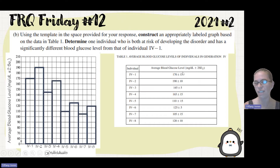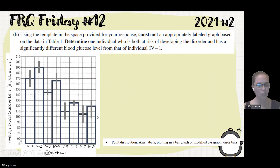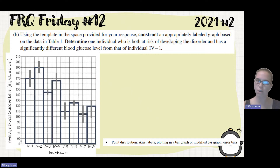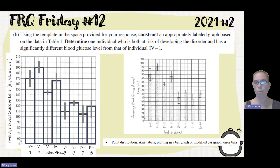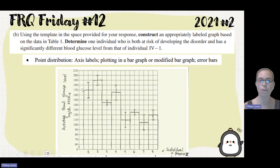We look at the plus or minus values. Notice we have a plus or minus 15, which means I'm going to go above 170 by 15 and below 170 by 15 for the error bars. We do that for all error bars. I'm doing this on a computer so things aren't exactly perfect, but this should be approximately what our graph looks like. You get points for axes labeling, plotting the bar graph or modified bar graph, and error bars. A modified bar graph means there's just a data point with the error bar coming above and below it. Here's what was on the actual scoring guidelines, and this is what the person who got the perfect score submitted — labeled axes, bar graph, and error bars — full credit.